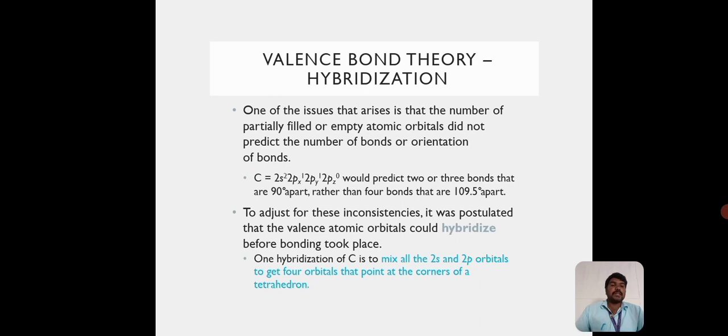To adjust for these inconsistencies, it was postulated that the valence atomic orbitals would hybridize before bonding took place. For example, hybridization of carbon is to mix all the 2s and 2p orbitals to get 4 orbitals that point at the corners of a tetrahedron.